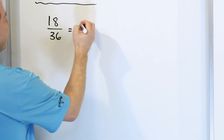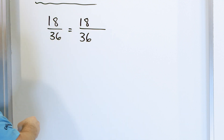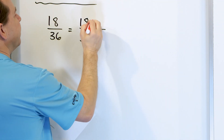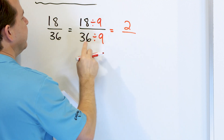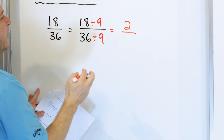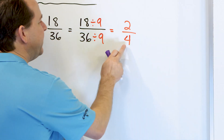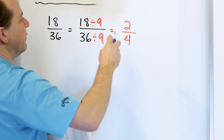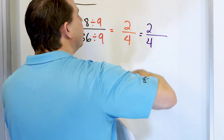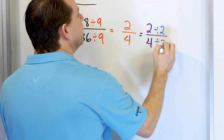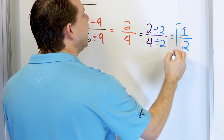Just choose the largest factor you can see. I happened to realize I could divide by 9: 18 divided by 9 is 2, and 36 divided by 9 is 4 because 4 times 9 is 36. But when we get to 2/4, we recognize immediately it's not simplified because they're both even numbers. So I divide both by 2: 2 divided by 2 is 1 and 4 divided by 2 is 2. So the answer is 1/2.